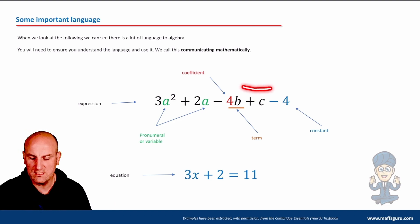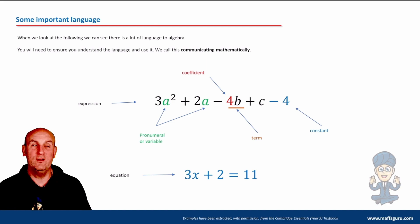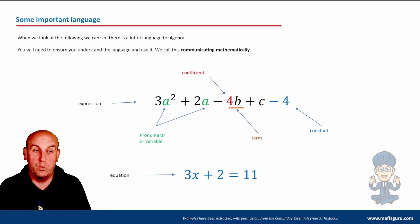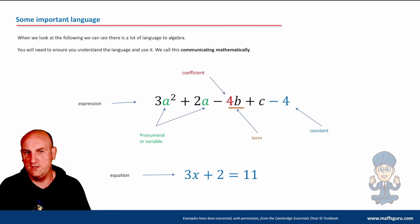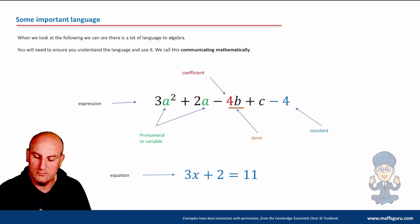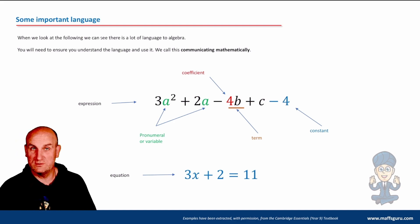Here's a question: what is the coefficient of C? You might say zero, nothing. But there is something there - it's actually the number one, because that is one C. We don't need to write the number one, but there is a coefficient. Letters are called pronumerals. That A, that B, and that C - they are all pronumerals. They're just letters.